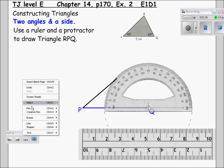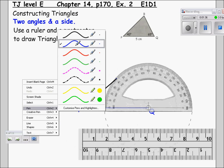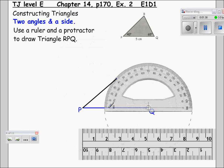The angle from Q is 65 degrees. This is going in a clockwise direction. Therefore we will use the outside numbers of the protractor. Mark where 65 degrees is.